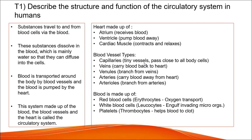Describing the structure and function of the circulatory system in humans: substances travel to and from blood cells via the blood. These substances dissolve in the blood, which is mainly water, so that they can diffuse into the cells. Blood is transported around the body by blood vessels, and the blood is pumped by the heart.